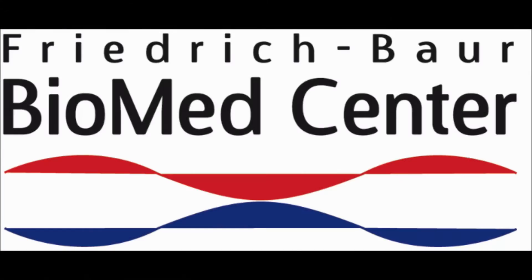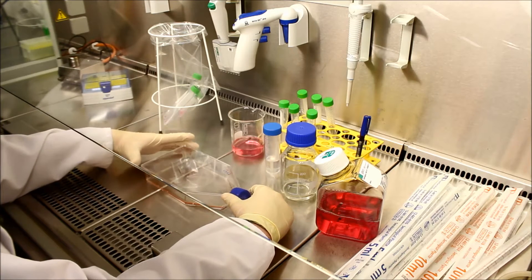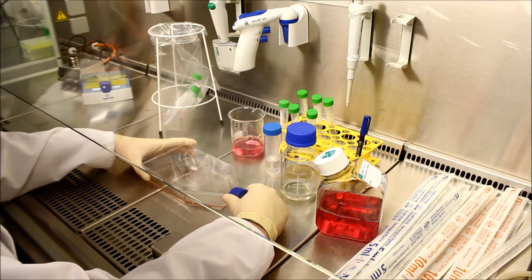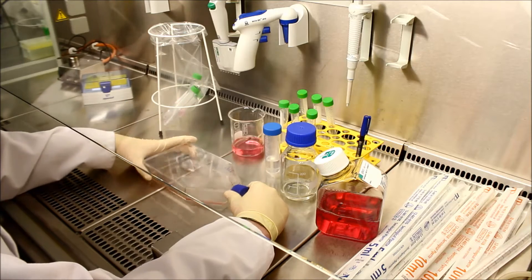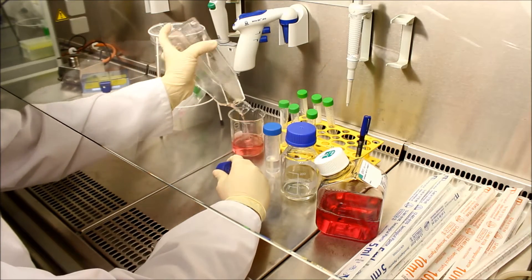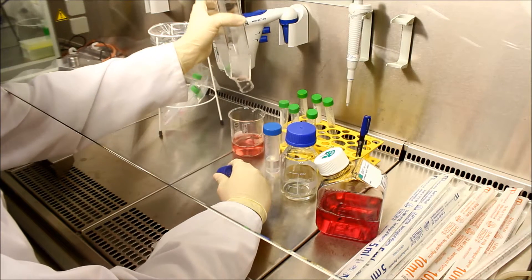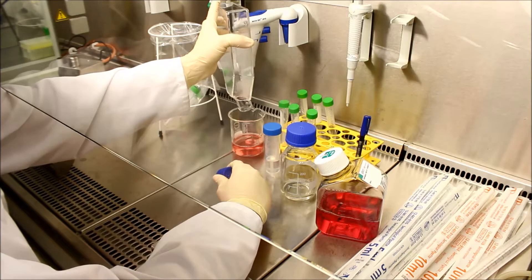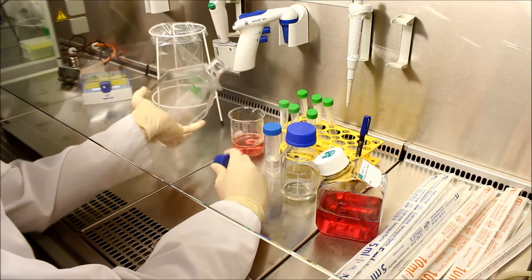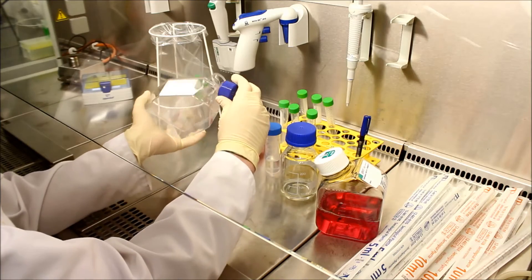Have fun watching the video. Here we have a flask of subconfluent HeLa cells. The first step is to decant the old medium. It can also be aspirated off. It's very important to watch out for drips on the neck of the bottle.